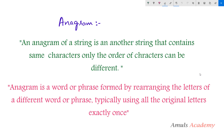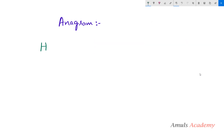First of all we need to know what anagram means. An anagram of a string is another string that contains the same characters — only the order of characters can be different. For example, the strings 'heart' and 'earth'.